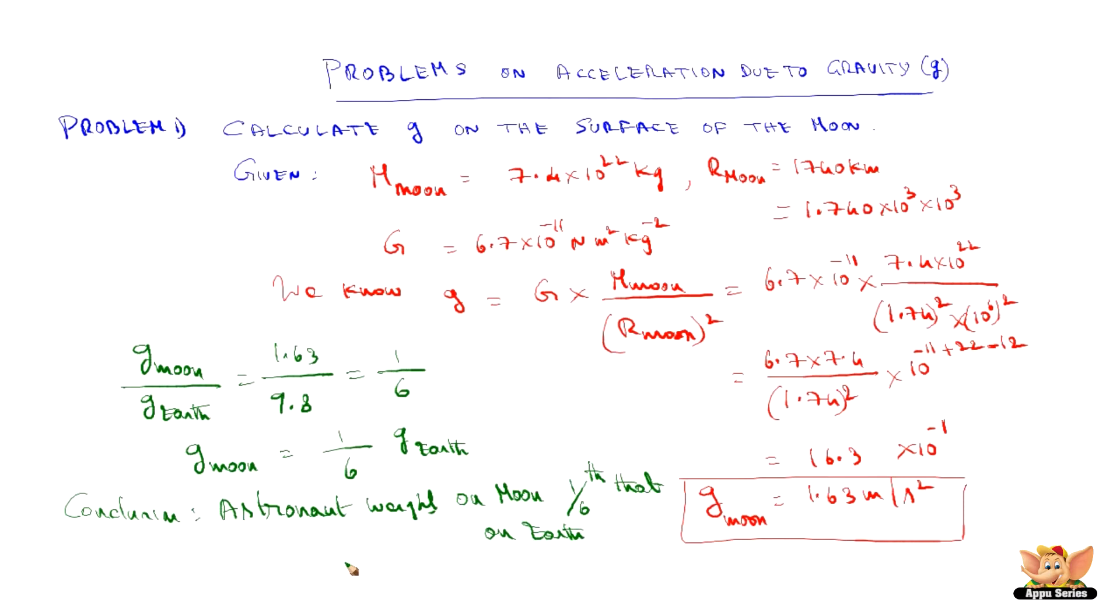What an observation. By calculating g moon knowing g earth we understood that g moon is 1/6 of g earth. This gives a direct conclusion that why astronaut weighs less on the moon compared to earth and how less? 1 by 6 times.